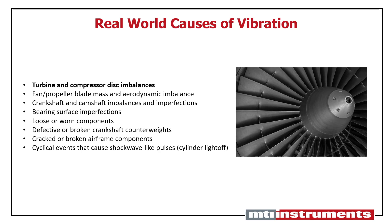These vibrations can include blade and propeller aerodynamic imbalances, worn components, imperfections of bearing surfaces, and cracked and broken airframe components. And even though modern vibration analysis equipment is capable of identifying almost any cause of vibration, including those just mentioned, for the purposes of this video we're going to focus on another major cause of airframe vibration: turbine and compressor mass imbalances.